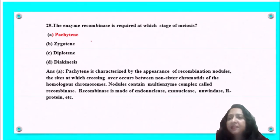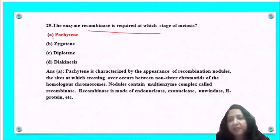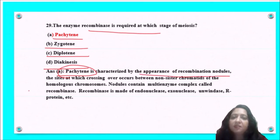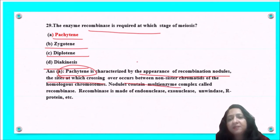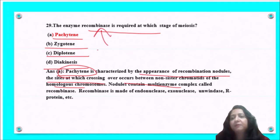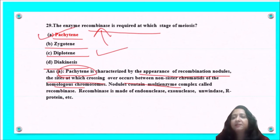Next question: the enzyme recombinase is required at which stage of meiosis — pachytene, zygotene, diplotene, or diakinesis? Pachytene is characterized by the appearance of recombination nodules at sites where crossing over occurs between non-sister chromatids of homologous chromosomes. These nodules contain a multi-enzyme complex known as recombinase. So option A, pachytene, is the correct answer.